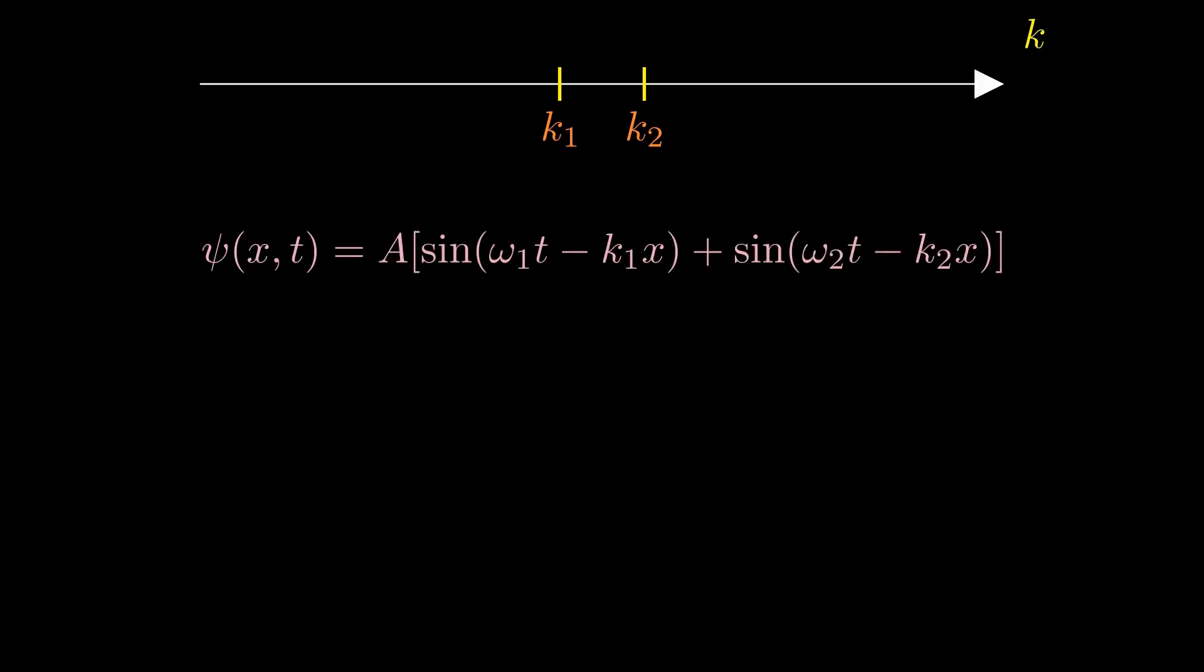Mathematically, the problem is as follows. This is the wavelength axis, and corresponds to it here is the k-value axis, the wave numbers. We now select two k-values or wavelengths from this axis. Then we sum the two sine functions corresponding to these two plane sine waves. Using a trigonometric identity, we find that the function of psi becomes.